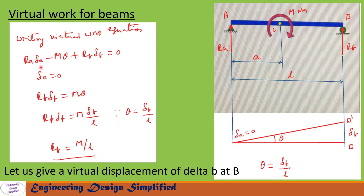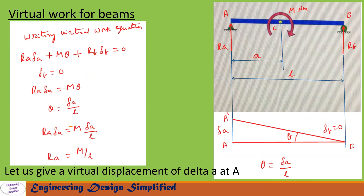Now let us write the virtual work equation: Ra·δa − M·θ + Rb·δb = 0. Since δa equals zero, the equation becomes Rb·δb = M·θ. Substituting θ = δb/L and simplifying, the reaction at B is Rb = M/L.